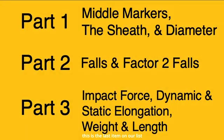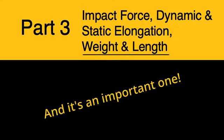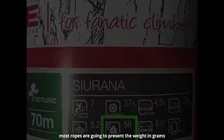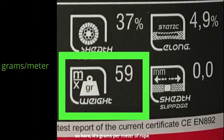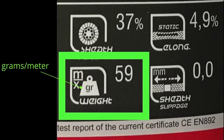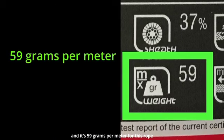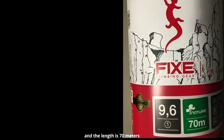Now let's take a look at weight and length. This is the last item on our list. Most ropes are going to present the weight in grams per meter of rope. And it's 59 grams for this rope, grams per meter. And the length is 70 meters.